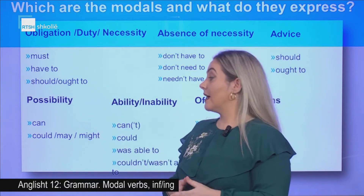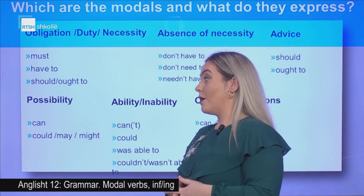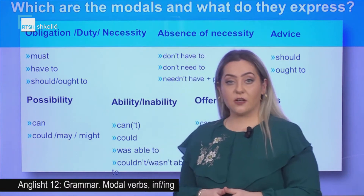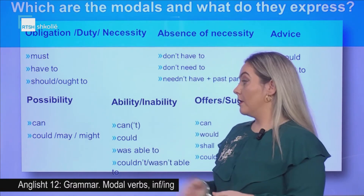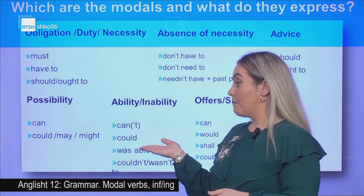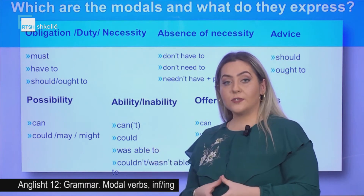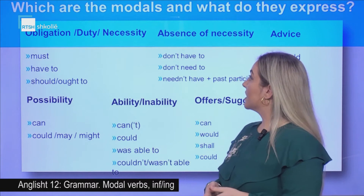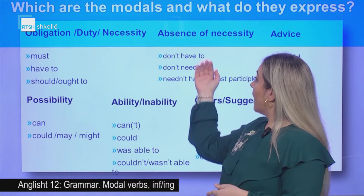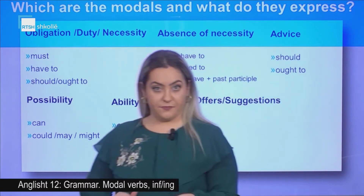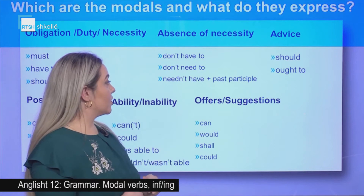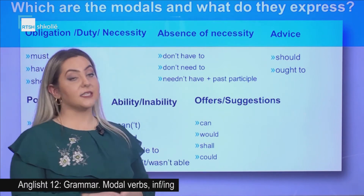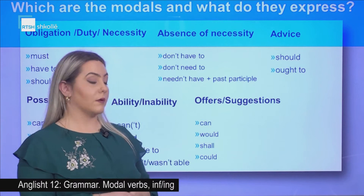Possibility: can, could, may, or might. 'Can' is used for general possibility. 'Could', 'may', or 'might' are used mainly in specific situations. Absence of necessity: don't have to, don't need to, needn't have plus past participle.